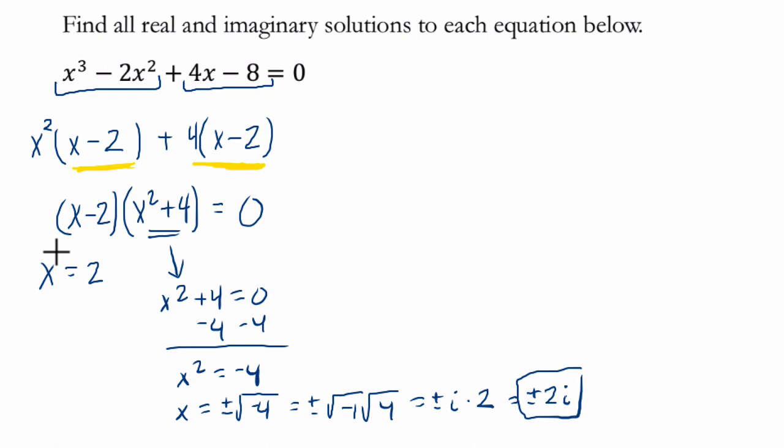So if x is positive or negative 2i, and also if x is 2, right, plug them into here, you get a result of zero. All right, I hope this helps.